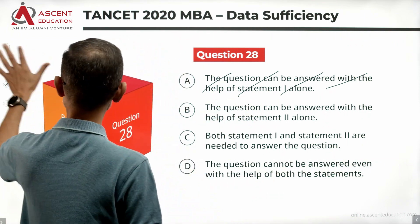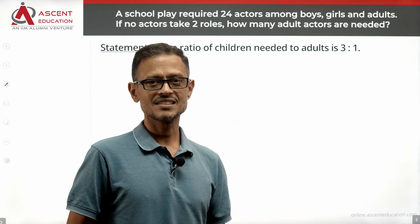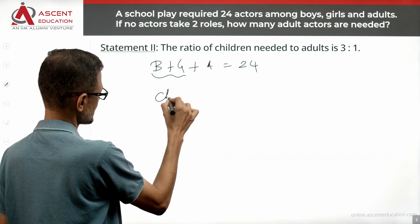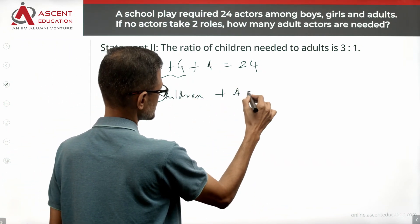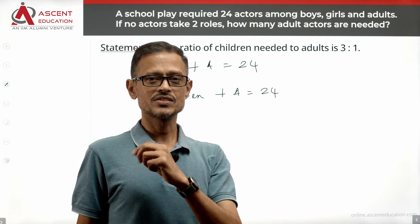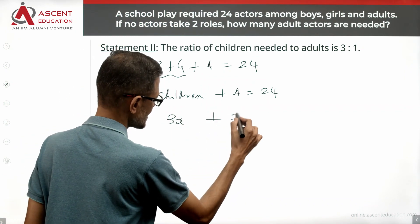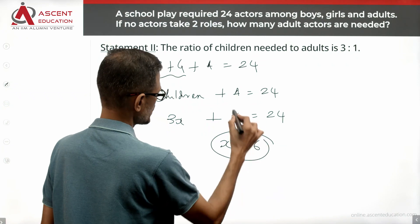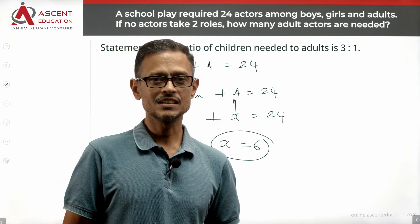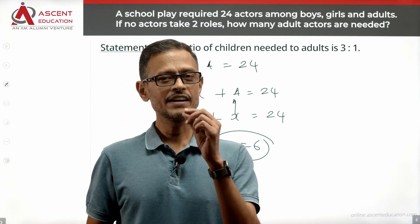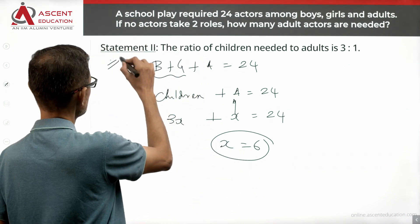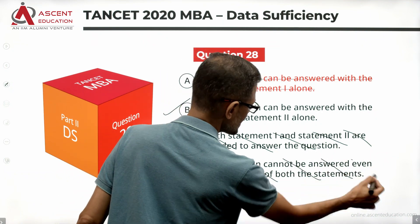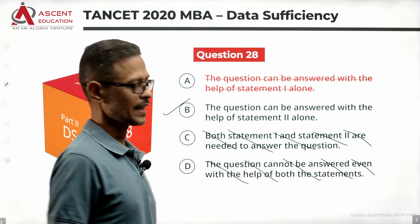Let's check whether Statement 2 alone is sufficient. Statement 2 says the ratio of children to adults is 3 to 1. Boys plus girls are children, so children plus adults equals 24. With a 3 to 1 ratio, if there are 3x children there are x adults, giving us 4x equals 24, which means x equals 6. So the number of adults is exactly 6 — a unique value. Statement 2 alone is sufficient, so the answer option is B. Eliminate C and D.